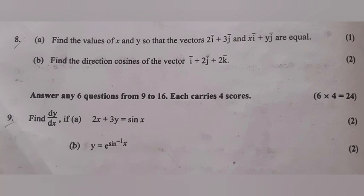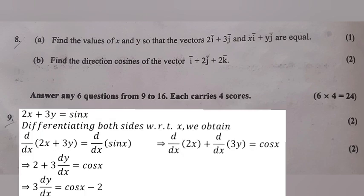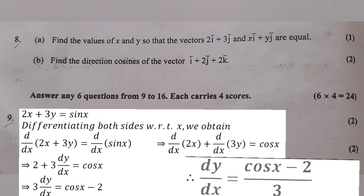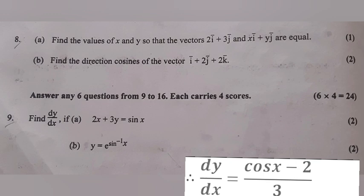Question 9: Find dy/dx. Part A: 2x + 3y = sin x. Differentiating both sides with respect to x: d/dx(2x + 3y) = d/dx(sin x), giving 2 + 3(dy/dx) = cos x. Therefore 3(dy/dx) = cos x − 2, so dy/dx = (cos x − 2)/3.